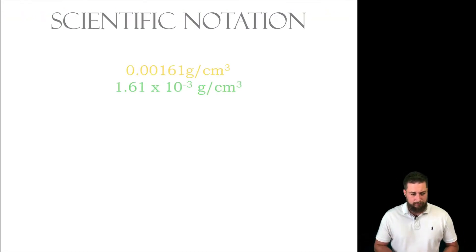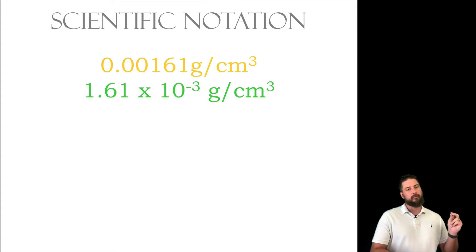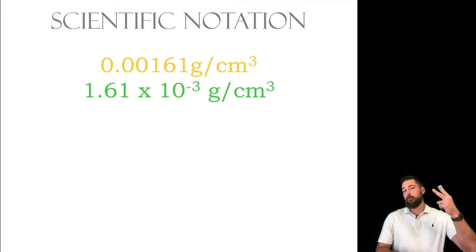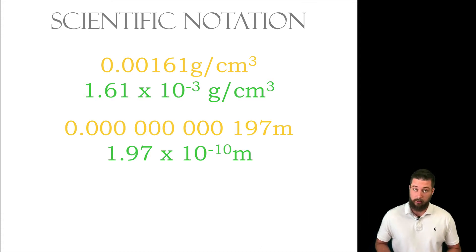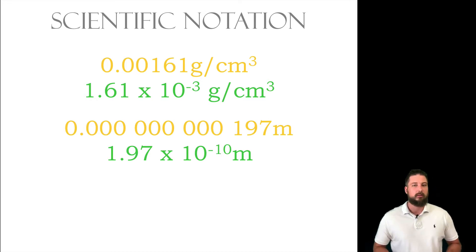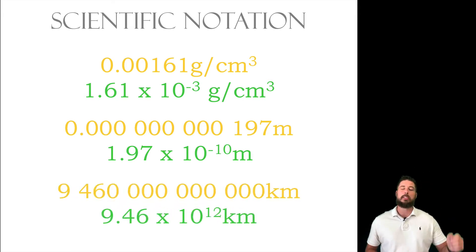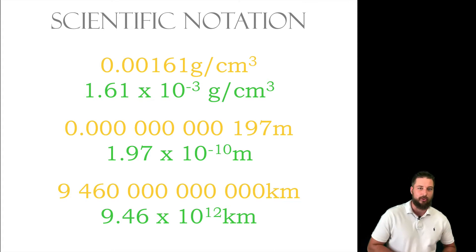Here is an example of how we can convert a number into scientific notation. Notice how .00161 is the same number as 1.61 times 10 to the negative 3. Those two numbers are the same, just written differently — one uses standard notation and the other uses scientific notation. Can you imagine having to write .00000000197 all the time? That would be uncomfortable, so we use the shorter form. We can also take really big numbers and make them into a more manageable form.